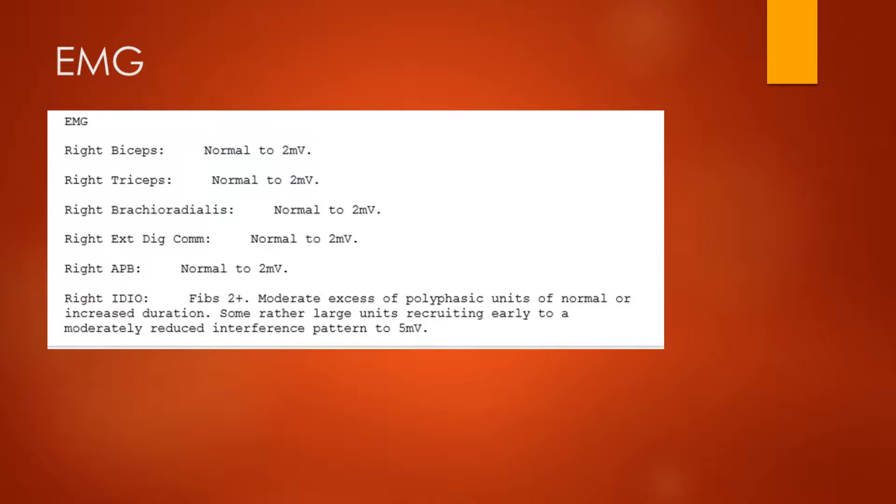Now, if you recall, we also were talking about neck pain, and so we proceed to do some EMG for that as well. And we can see that the EMG is normal for the biceps, triceps, brachioradialis, and the EDC as well, and APB. However, in the FDI, the first dorsal interosseous muscle, we can see some active denervation there. We have a number of fibrillations, moderate evidence of denervation as well, and there's a reduced interference pattern to 5 millivolts. So there's some ongoing denervation here, localized to the FDI muscle.